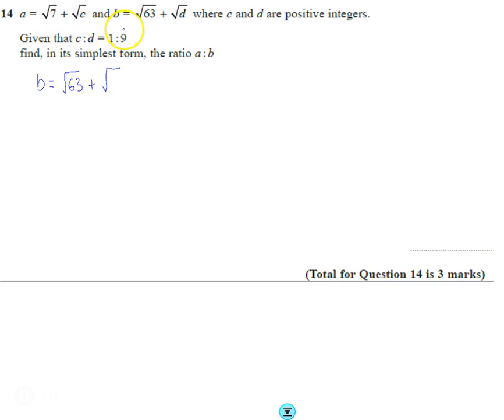So instead of this D, I'm going to write it. Now I'm going to use this relationship. I know that there's one part for C, there'd be nine parts, or one part for C, there'd be nine parts of D.